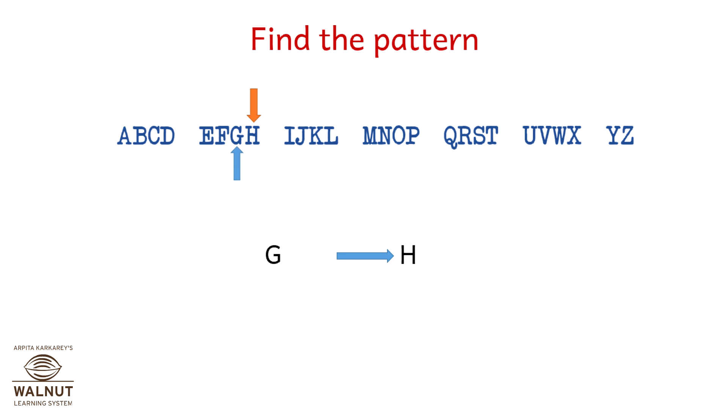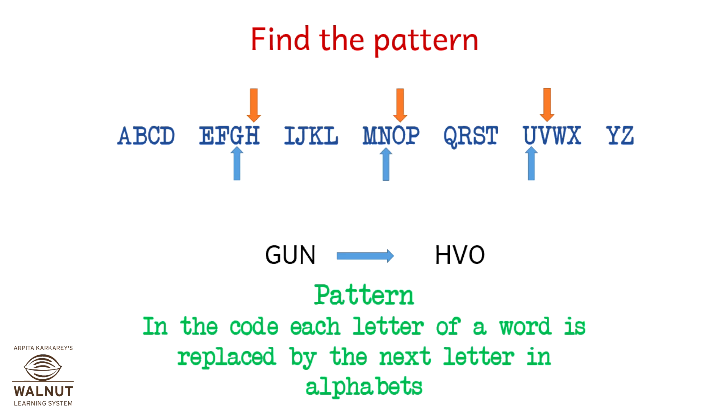G is put as H, U is put as V, N is put as O. So in the code, each letter of a word is replaced by the next letter in the alphabet series.